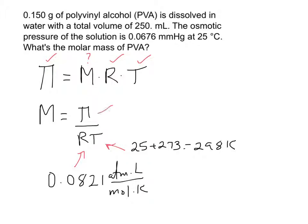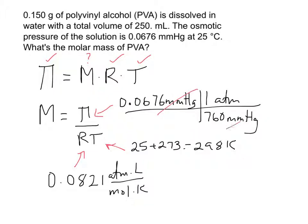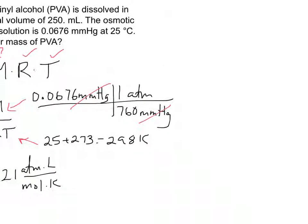So we just need to plug in the osmotic pressure, but you can see that if we just plug in this value, the units won't cancel, so that's pretty easy. We know one atmosphere is 760 millimeters of mercury, and so that allows us to convert. And if you do your conversion, we can go ahead and just kind of pop that over, and so this gives us 8.89 times 10 to the minus 5 of an atmosphere.